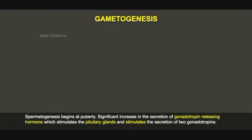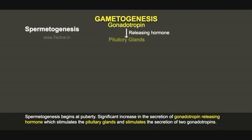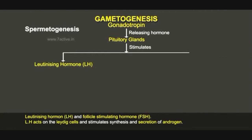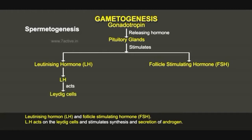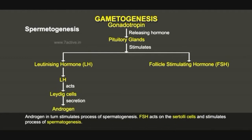Spermatogenesis begins at puberty with a significant increase in the secretion of gonadotropin-releasing hormone, which stimulates the pituitary glands to secrete two gonadotropins: luteinizing hormone (LH) and follicle-stimulating hormone (FSH). LH acts on the Leydig cells and stimulates synthesis and secretion of androgen, which in turn stimulates spermatogenesis. FSH acts on the Sertoli cells and also stimulates spermatogenesis.